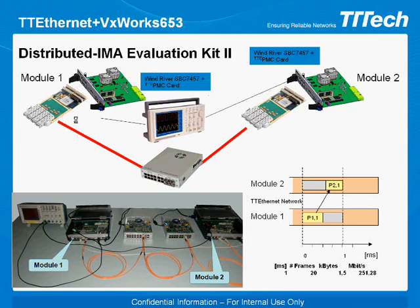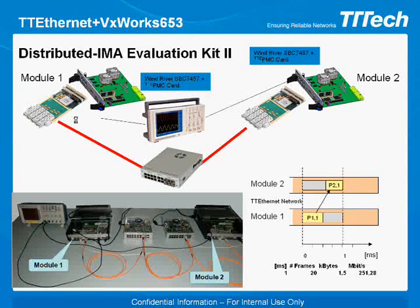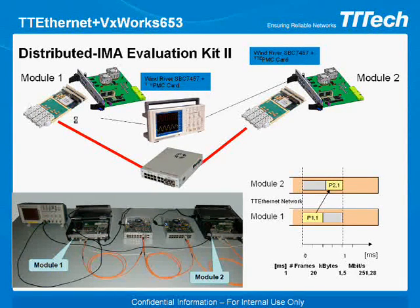On this slide we see the demonstrator setup with VxWorks 653 and TT Ethernet. This demonstrator consists of two switches, two PMC cards, and two Wind River embedded computers with pre-installed VxWorks 653 and TT Ethernet. This test platform allows you to test TT Ethernet network and system performance and build applications for IMA and distributed IMA systems. Switches can be connected to work as a dual-redundant or multi-hop system, depending on how TT Ethernet network interface controllers are connected to switches. An application design framework is provided with examples for demonstration with this kit.